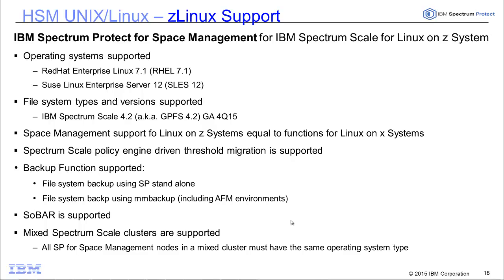Moving on to slide 18, for Spectrum Protect for Space Management on Unix/Linux, we've added Z Linux support for Red Hat Enterprise Linux 7.1 and SUSE Linux Enterprise Server 12. The file system type is GPFS 4.2 or Spectrum Scale 4.2, which also GA'd in Q4 of this year. The functions on Z Linux support for HSM are equivalent to what you'd see on Linux for X system HSM support. This includes Spectrum Scale Policy Engine Driven Threshold Migration. For backup functions, we can do Spectrum Protect client standalone backups or MMM backups including AFM environments. We do support SOBAR disaster recovery. All space management nodes in a mixed cluster must have the same operating system type.